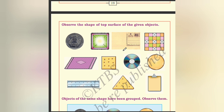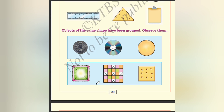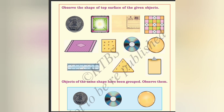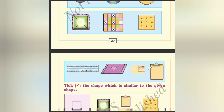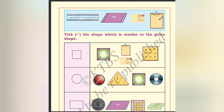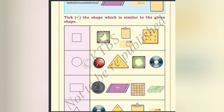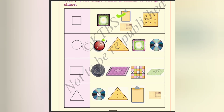Observe the shape of the top surface of the given object. It is having the circular shape here; it is a square shape; rectangle; square; parallelogram; circle; this also circle; it is having the square shape; this one the rectangle shape; this is also a rectangle shape. Objects of the same shape can be grouped — circle-shaped objects are grouped together, square-shaped grouped together, and rectangular-shaped grouped in one figure.